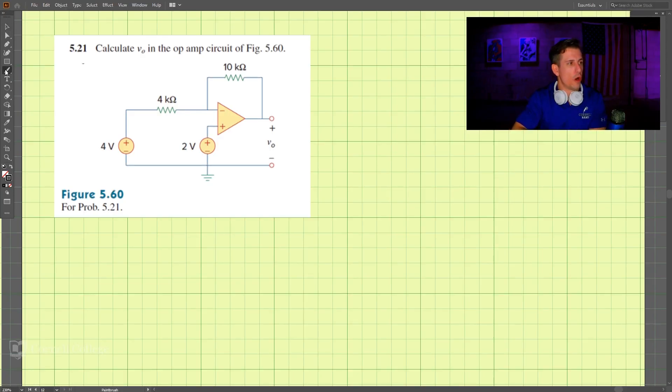This is problem 521, and we're to calculate v naught here. Remember that this is 2 volts here, so it also here must be 2 volts. The 2 volts and 2 volts. And we know about the current here—that current is zero. The current here and the current here is zero.